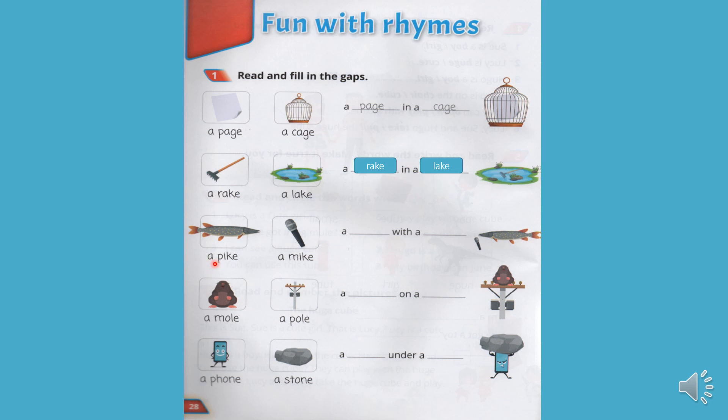A pike. A mike. Щука. Мікрофон. A pike with a mike. Щука з мікрофоном. A mole. A pole. Кріт. Столб. A mole on a pole. Кріт на стовбі.